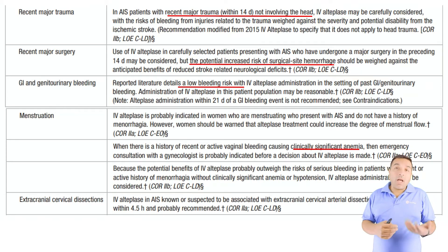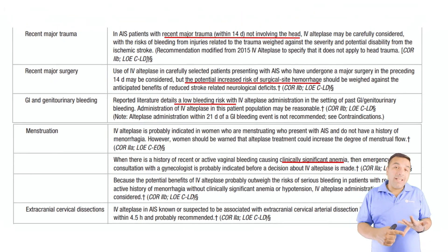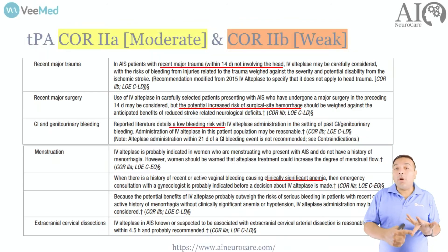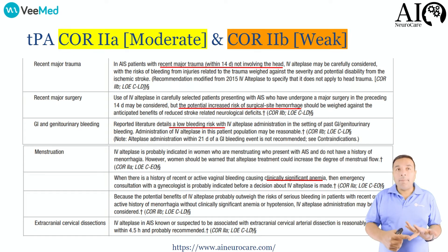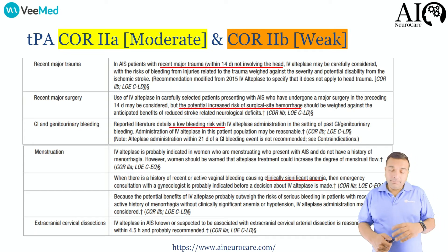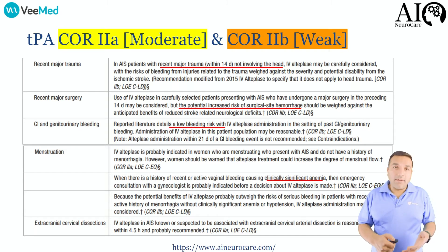Menstruation is not a contraindication, but if there is heavy menstruation with clinically significant anemia, the recommendation is to get an urgent gynecological consult to determine if TPA should be given. Extracranial cervical dissection is also not a contraindication — go ahead and give TPA.